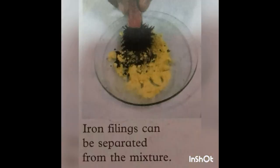We will discuss chemical change through an example. Take a mixture of sulfur and iron filings to understand the chemical change. Some yellow sulfur powder and iron filings are mixed together. The mixture can easily be separated by stirring it with a magnet.